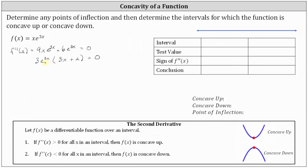Now, 3e to the 3x is never going to equal 0, which means the only way the equation will equal 0 is if 3x plus 2 equals 0. Solving for x, we subtract 2 on both sides and then divide both sides by 3, giving us x equals negative 2/3. This is the only location where we might have a point of inflection. Since the domain of the original function is all real numbers, on the number line in the upper right corner we have negative infinity on the left and positive infinity on the right, with an open point at x equals negative 2/3.